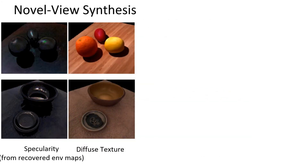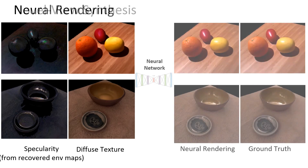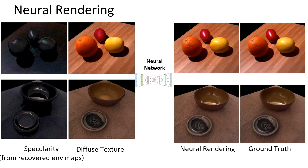Once the environment map is recovered, we can use it for realistic re-rendering of the scene, a task called novel view synthesis. The physical model of the lighting enables predicting specular highlights from an arbitrary viewpoint. Specifically, we adopt a neural rendering scheme and provide the specular and diffuse components as input to a neural network, which in turn provides realistic view prediction.